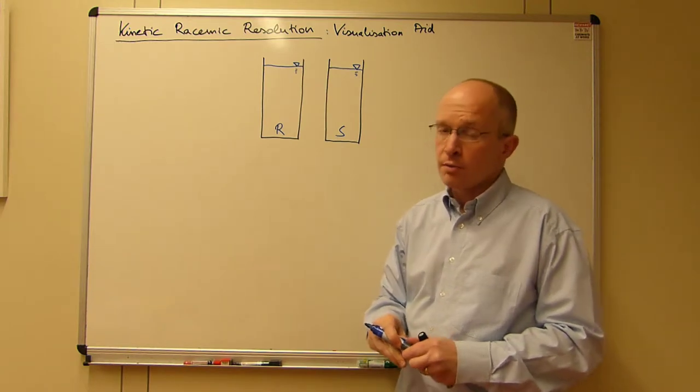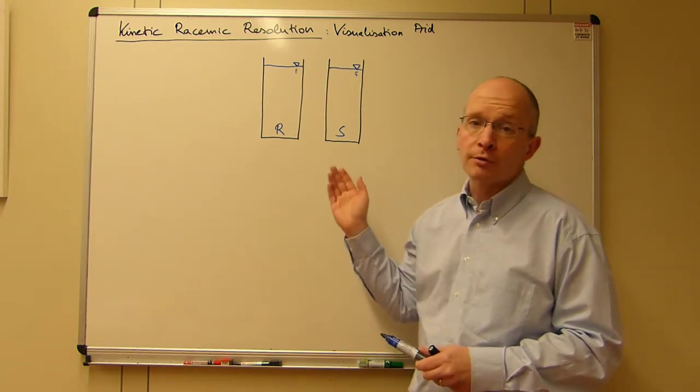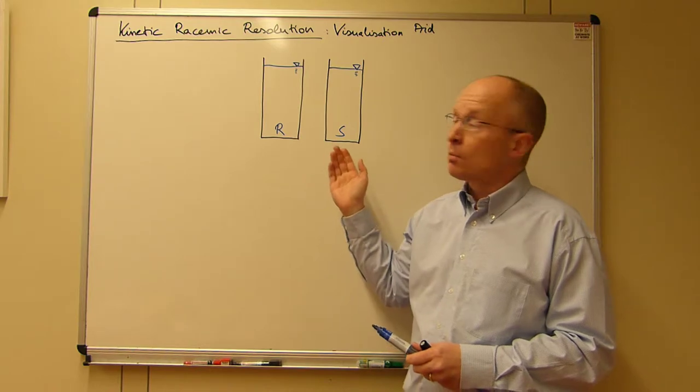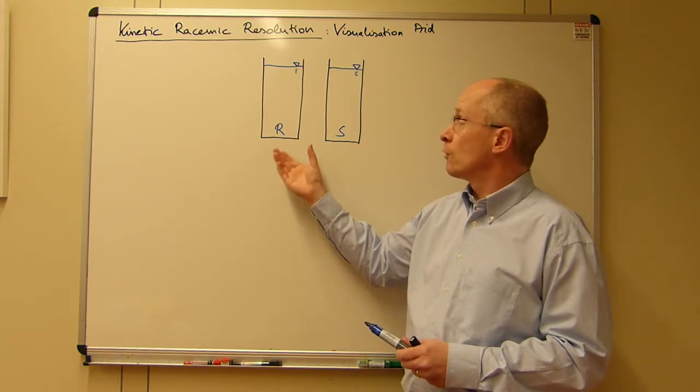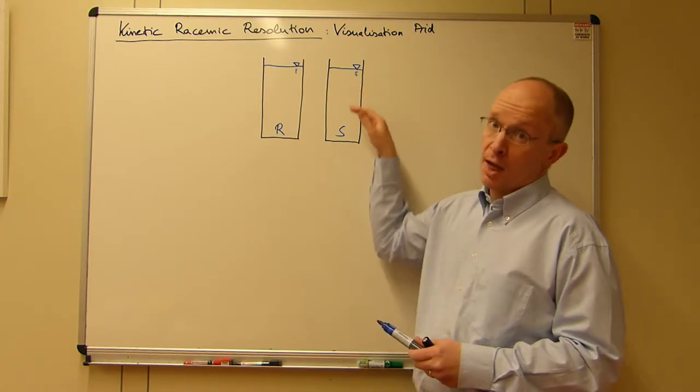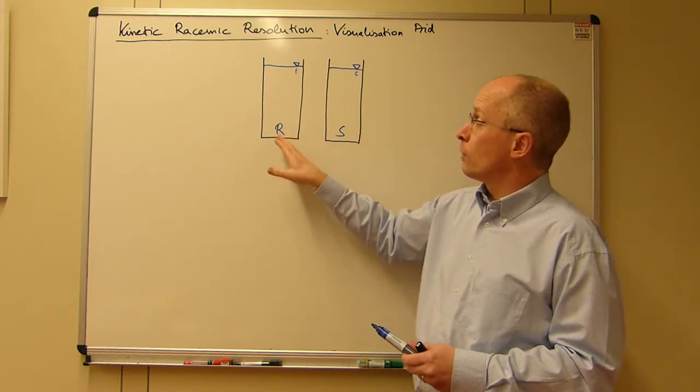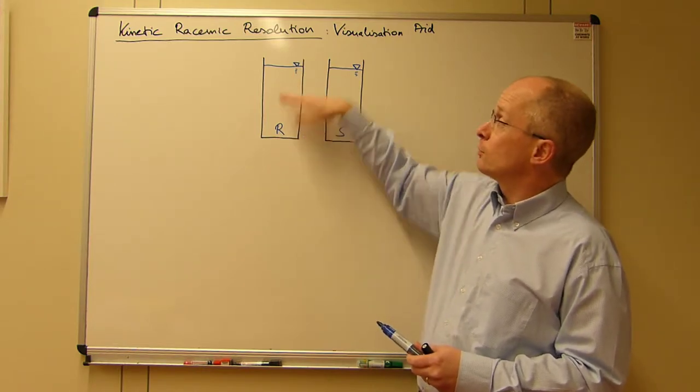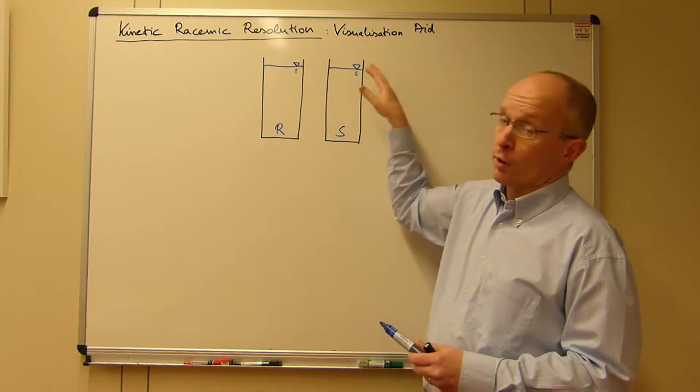First, we take the reservoir, the one-to-one mixture of enantiomers as being two reservoirs of same size and, of course, of same level. So you can imagine the amount of R being this reservoir filled to the same level as the reservoir of S.